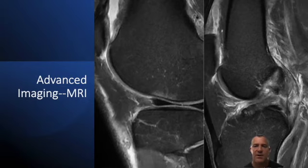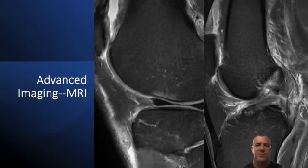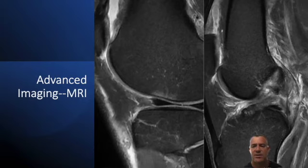Patients often ask whether it's a partial or complete tear. Many times partial tears we actually don't see in clinic. Complete tears are ones where you have instability on exam, and almost always the MRI is going to show a complete tear.